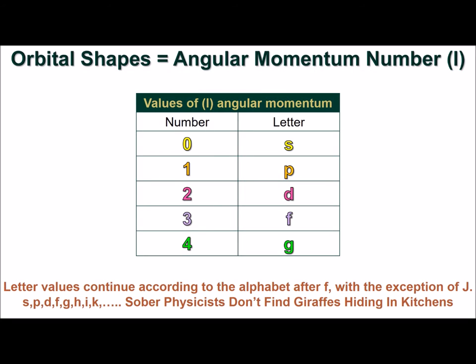Now that we have an understanding of quantum numbers, we need to look at some orbital shapes. Remember that the shapes of orbitals correspond to the angular momentum number L. In this chart, we can see the number and letter values of L. Let's look at some of the shapes of the orbitals defined by L, and the orbital's orientation in space described by m sub L.